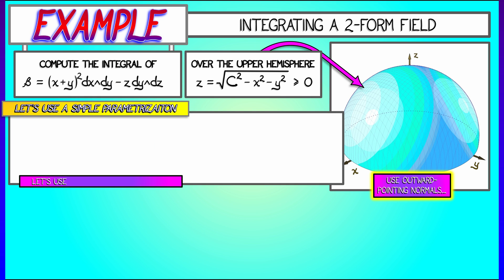Let's use outward-pointing normals and then set up the simplest possible parametrization g. Instead of using s and t, let's use x and y and do the obvious thing. x goes to x, y goes to y, and z is root c squared minus x squared minus y squared. That's our parametrization g.